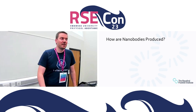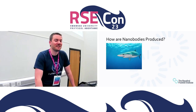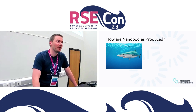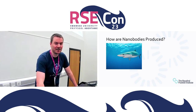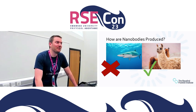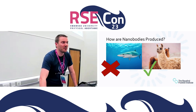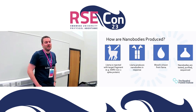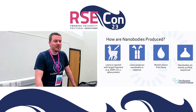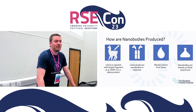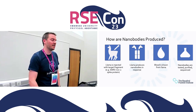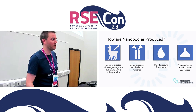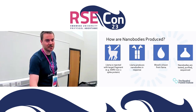So how are nanobodies produced? You could consider getting them from sharks, but if you're trying to do a blood draw of a shark, it's probably more likely to draw blood from you — that option was quickly eliminated by our health and safety team. We decided to go with the slightly safer, fluffier, friendlier option of llamas. Once you have your llama, you have some target antigen — for example, the SARS-CoV-2 spike protein. Over a few weeks, the llama produces nanobodies in response. Blood is then drawn, and those nanobodies can be tested, purified, sequenced, and taken forward to therapeutic, diagnostic, or imaging uses.